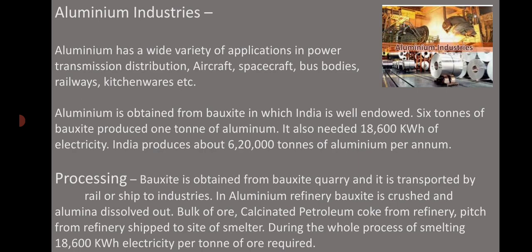Six tons of bauxite produce one ton of aluminium — that means the ratio is 1:6. It also requires continuous high-grade electricity for smelting; the requirement is 18,600 kilowatt power. India produces about 6 lakh 20 thousand tons of aluminium per annum.